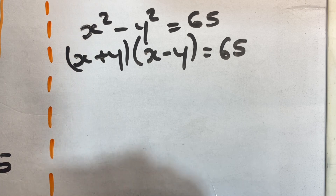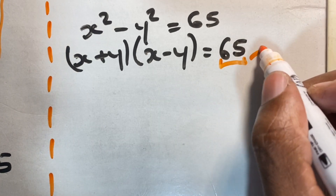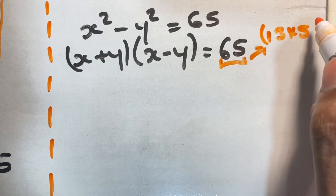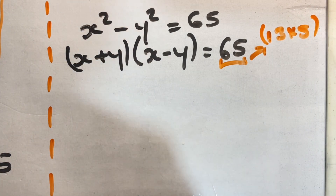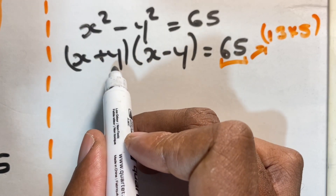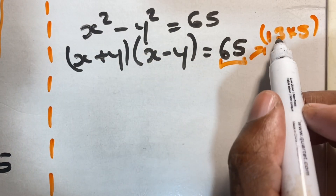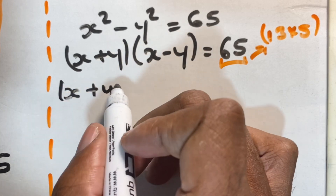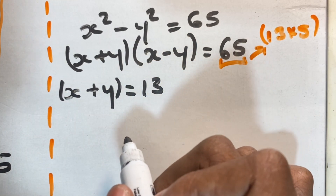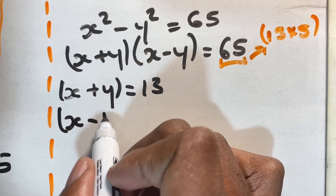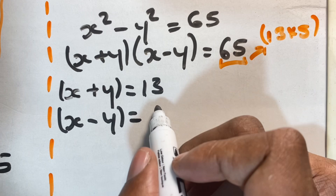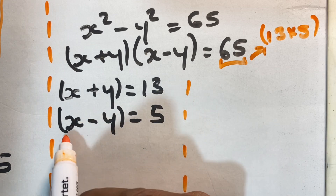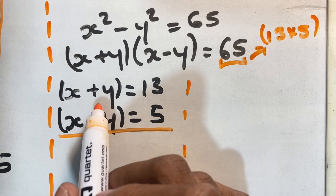Now we can look at our 65 and find the factors of 65 — two numbers multiplied together to give us 65. Those numbers are 13 and 5, as 13 times 5 gives us 65. This means one of the brackets is going to equal 13 and the other is going to equal 5. We give the positive value 13 to the x plus y bracket and 5 to the x minus y bracket, so x plus y is equal to 13 and x minus y is equal to 5. It is more logical to have x plus y equal to 13 and x minus y equal to 5 since 5 is less than 13.